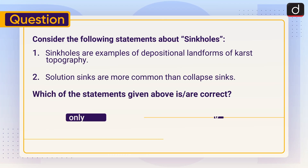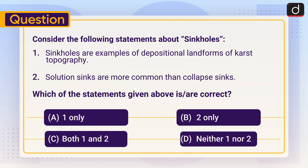Now it's time for the practice question. Consider the following statements about sinkholes: (1) Sinkholes are examples of depositional landforms of karst topography. (2) Solution sinks are more common than collapse sinks. Which of the statements given above is or are correct? One only, two only, both one and two, or neither one nor two? Send us the answer in the comment section.